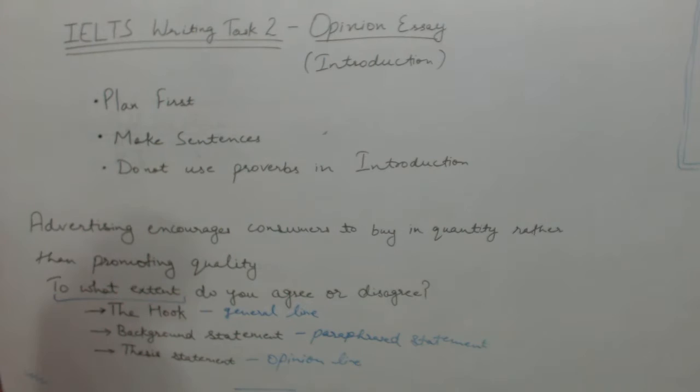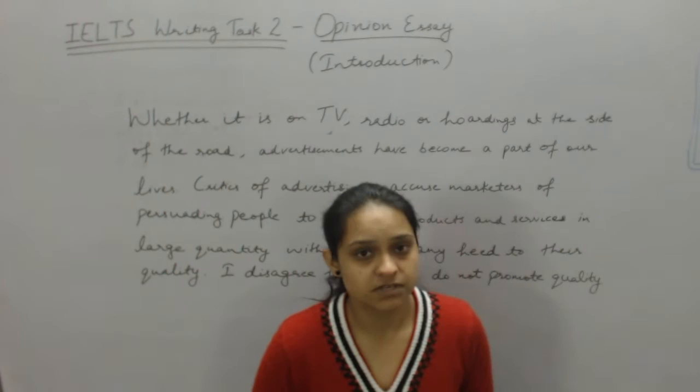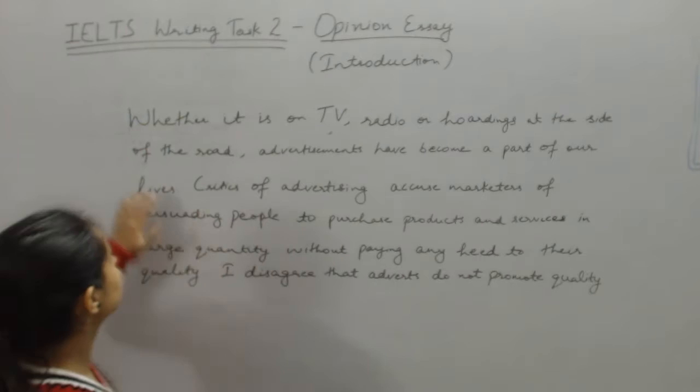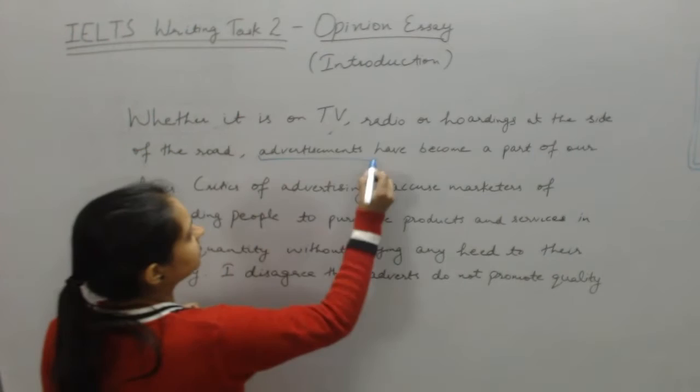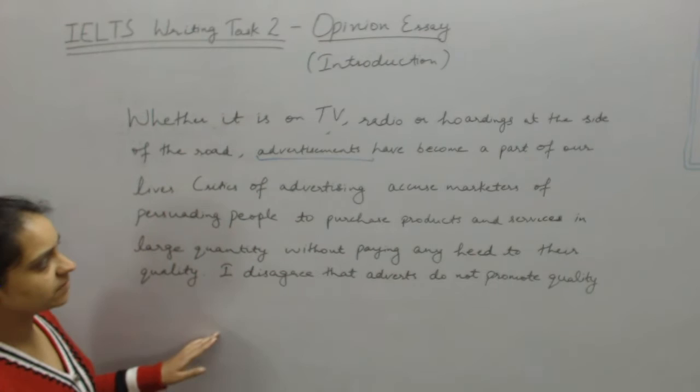Here is the introduction. As the question is about advertising, we must write the general line about it. For example: 'Whether it is on TV, radio, recordings, or at the side of the road, advertisements have become a part of our life.' This is the general line about advertising. Since the question was about advertising that encourages people, the general line should be about advertisement. Next is the background statement — that is paraphrasing the question.